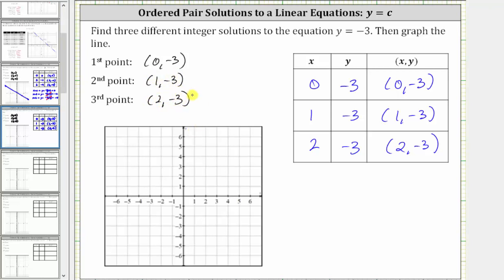Now let's plot the points on the coordinate plane. For zero comma negative three from the origin, we do not move left or right. We just go down three units. Here is zero comma negative three. For one comma negative three from the origin, we move right one down three.